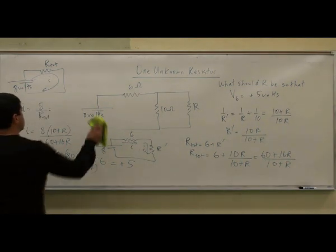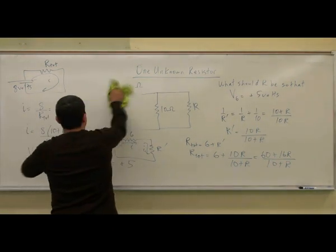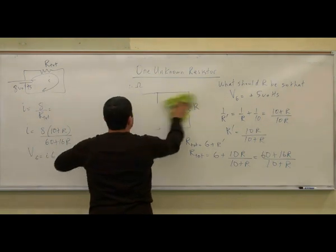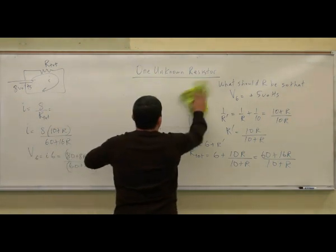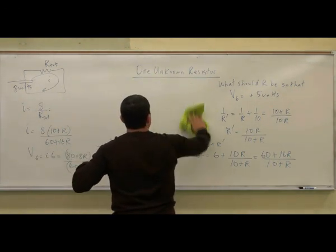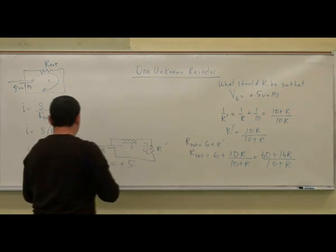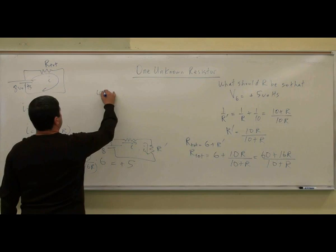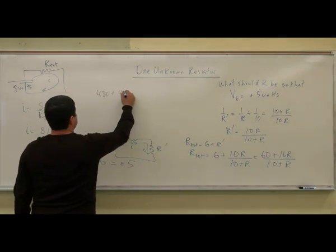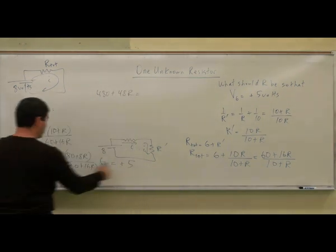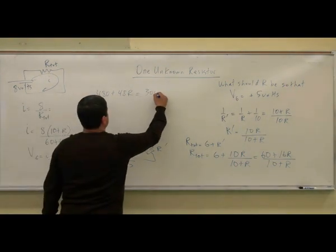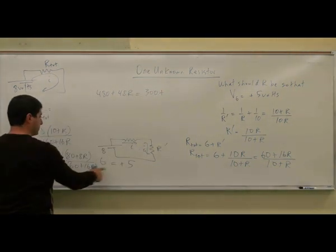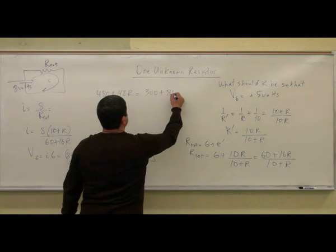So now solve for R. Well, we're pretty much done here. So you could cross multiply here, you have 480 plus 48R, and then cross multiply here, five times 60 is 300, plus 16R, that'll be 80R.